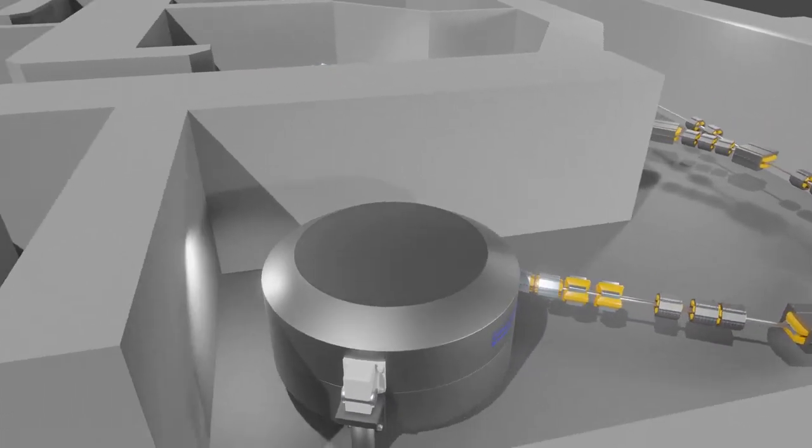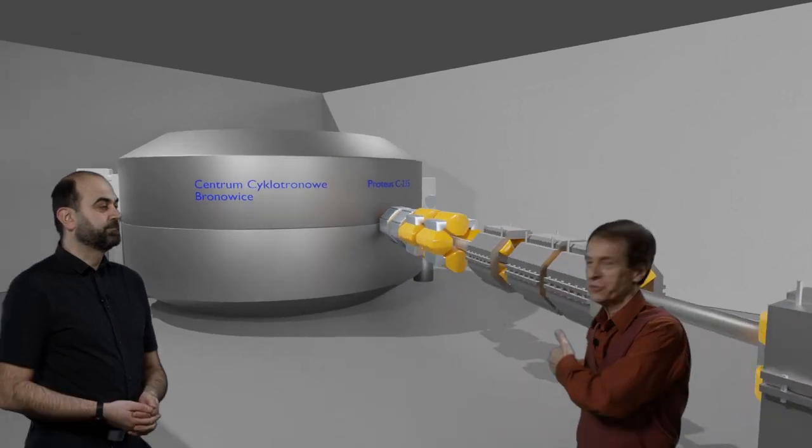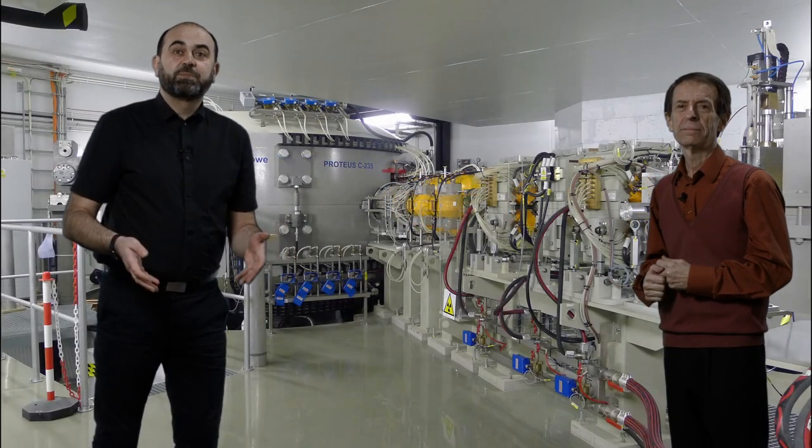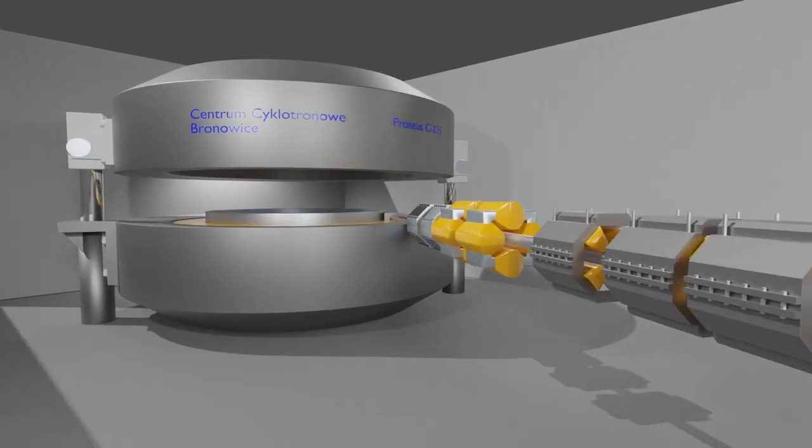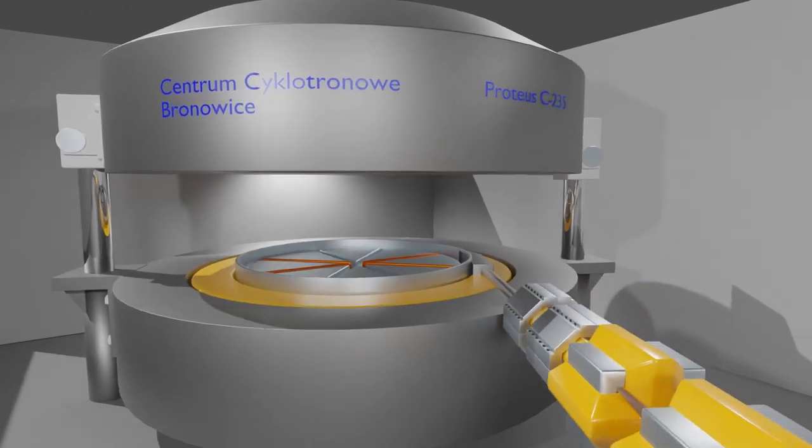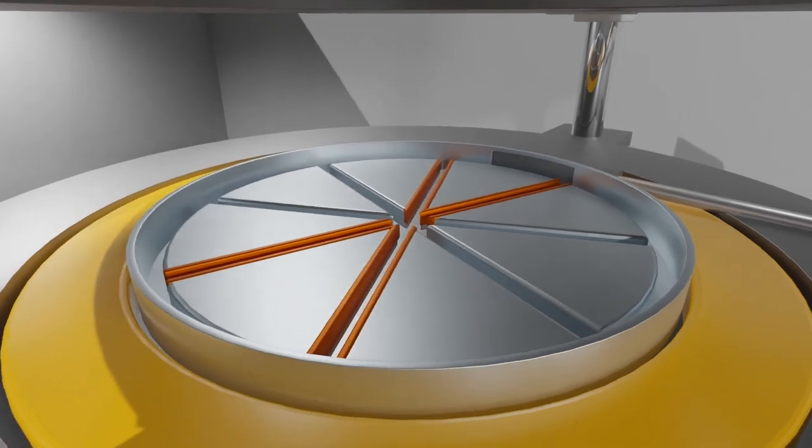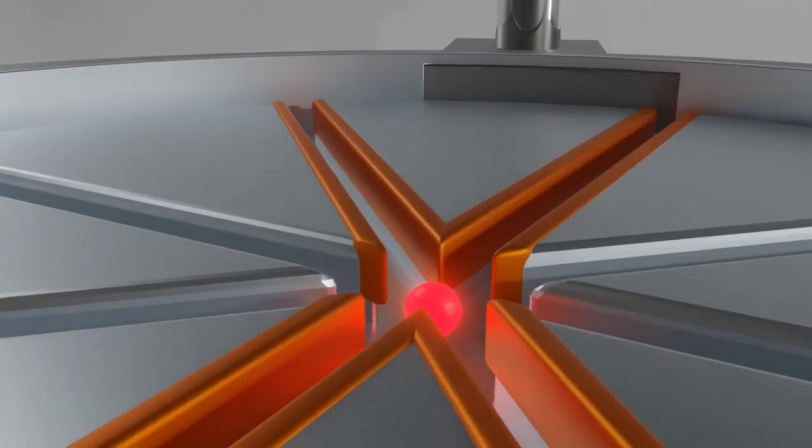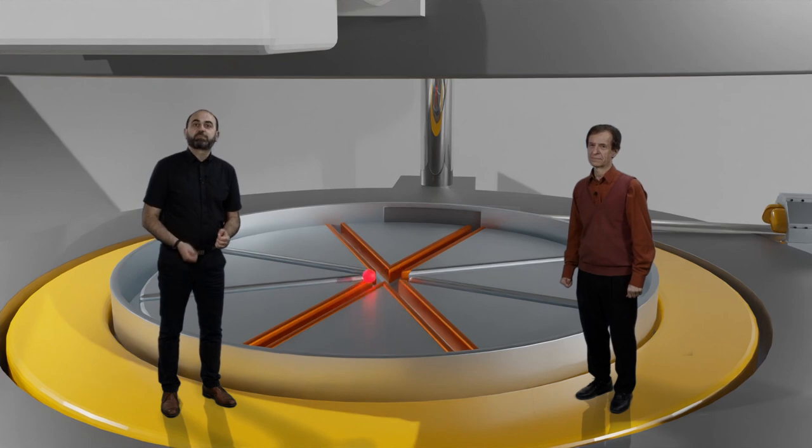The cyclotron itself is behind these doors. What we see is the cyclotron yoke. I understand that the chamber with duants is inside. It can be seen when we sometimes lift the upper part for maintenance purposes. The duants have a diameter of two meters. Underneath we ionize hydrogen and introduce the obtained protons at this place in the center. When they get into the field of this large magnet and also into the electrostatic field between the duants, the process of their acceleration begins.